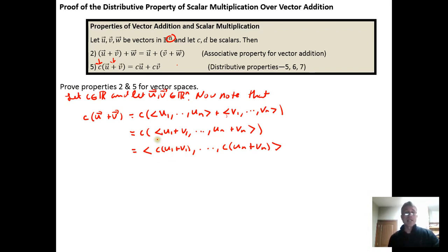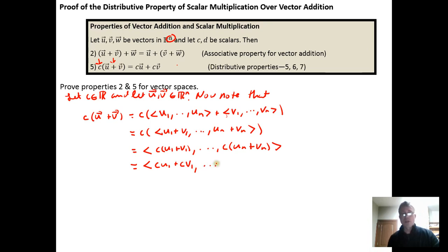Here we recognize that each component is just a real number — u₁ is just a real number, v₁ is just a real number. This is just the distributive property of real number multiplication over real number addition. So we use that distributive property to get (cu₁ + cv₁, ..., cuₙ + cvₙ).